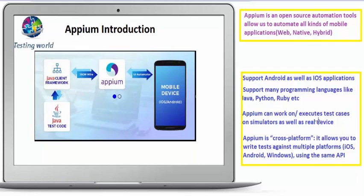APM can execute our test cases on a simulator as well as a real device. A real device means I have an actual mobile device on which I want to execute my test cases. A simulator is a software which behaves like a mobile device — when you open it, it displays a screen like a mobile device screen and you can perform different activities just as you would on a real device.